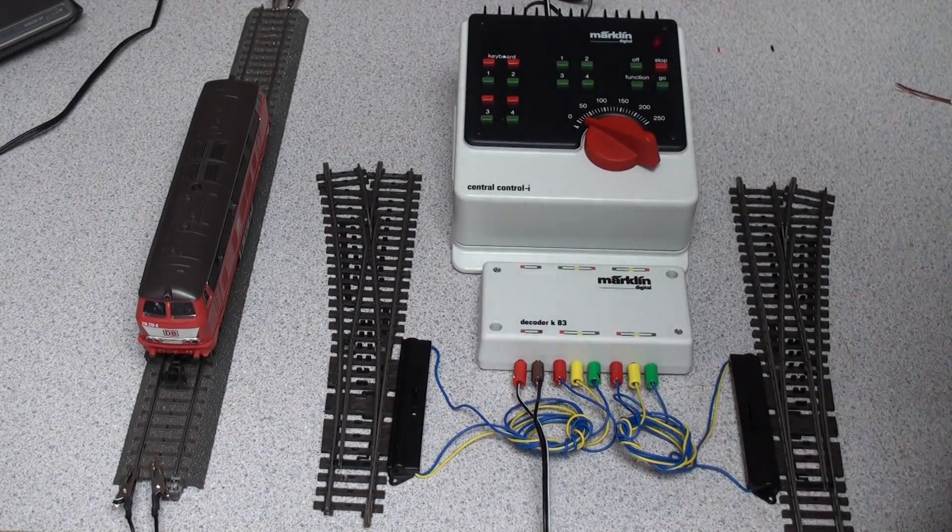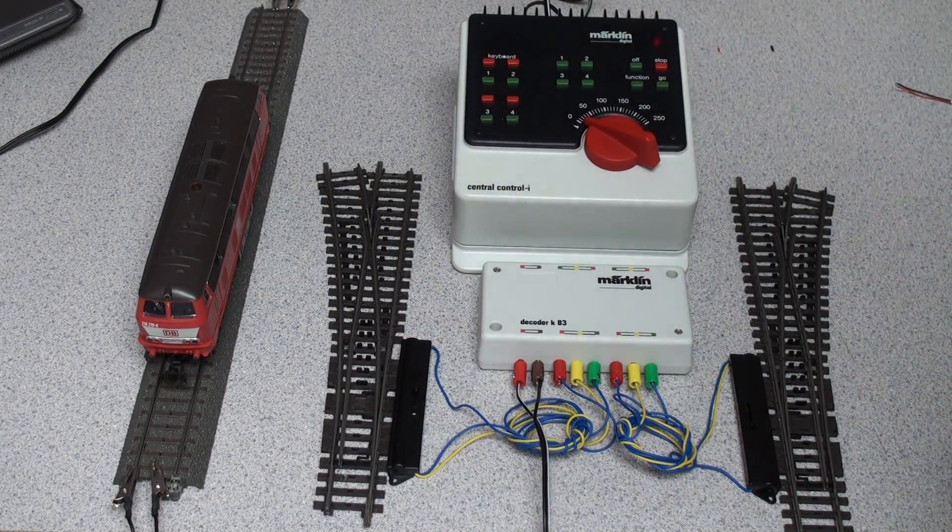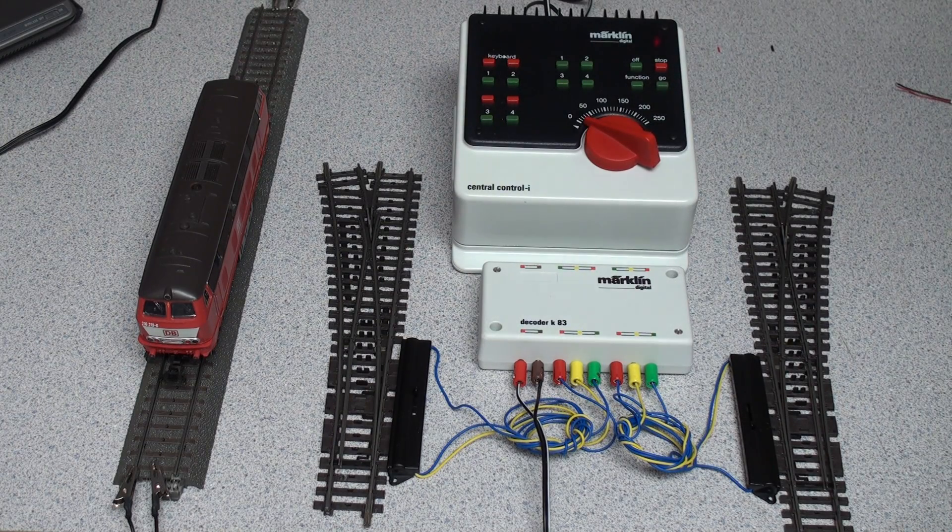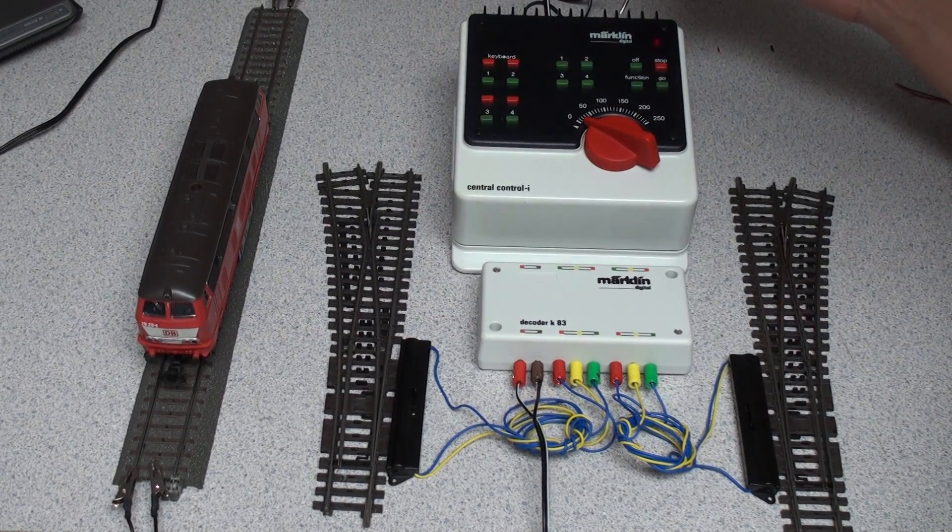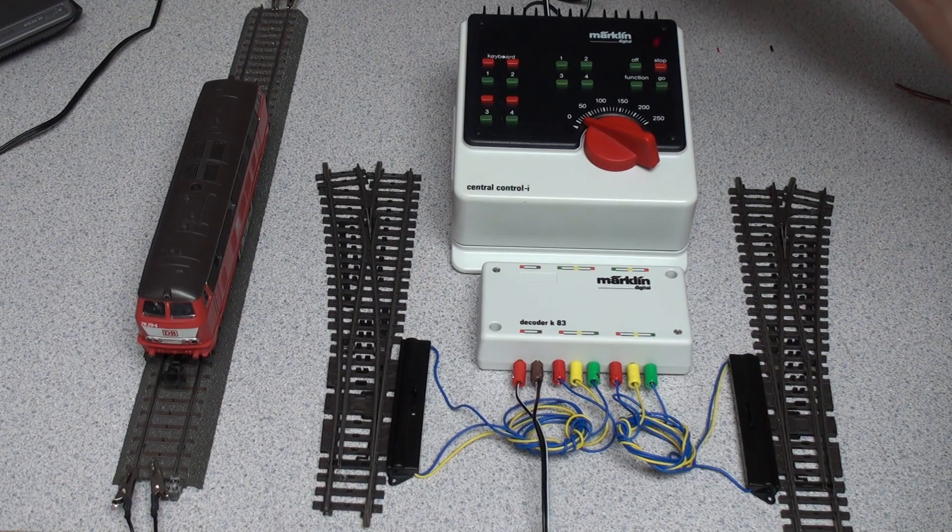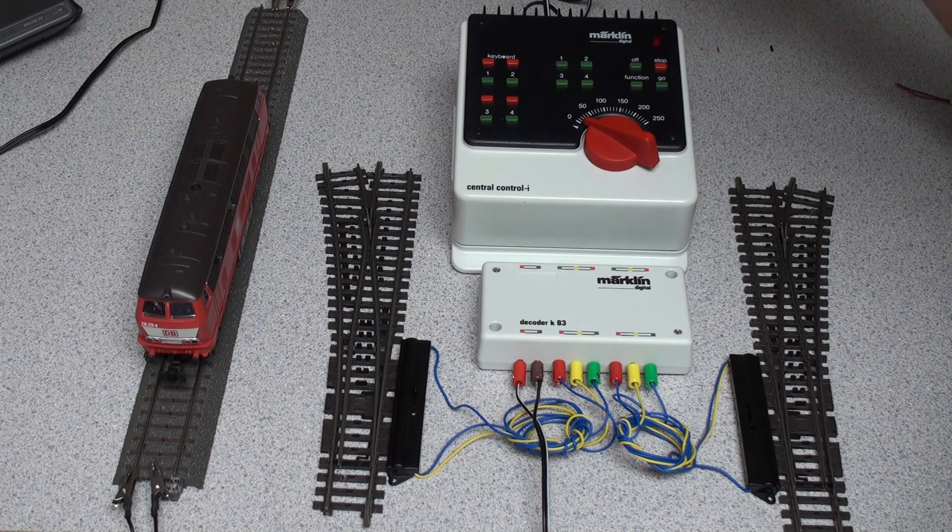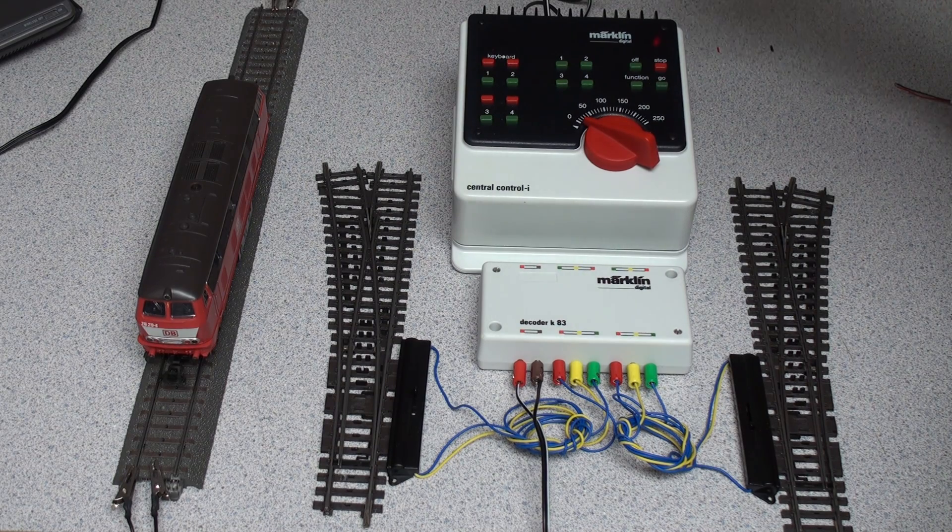Hi there, Alex DCC Train. Today's a quick presentation about testing the Merklin Central Control unit, item number 60231, decoder K83 for switch machines.